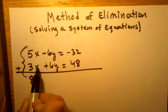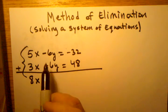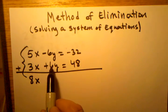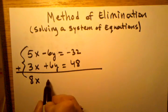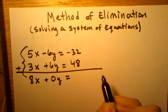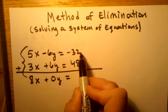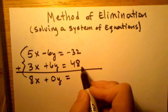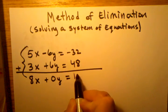5x plus 3x is going to get me 8x. Negative 6y plus 6y is going to get me 0y. And negative 32 plus 48 is going to get me a positive 16.